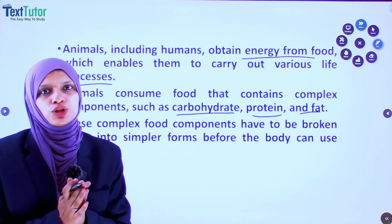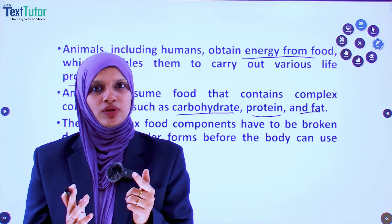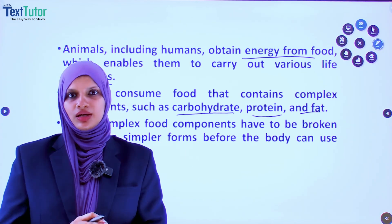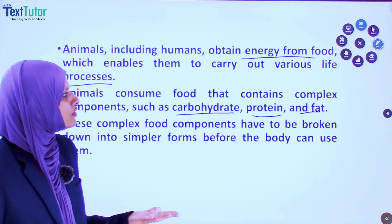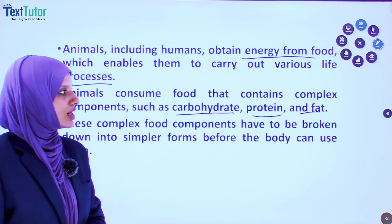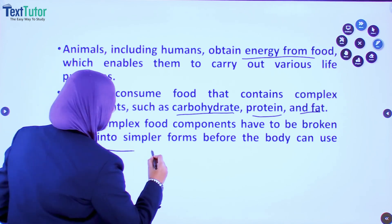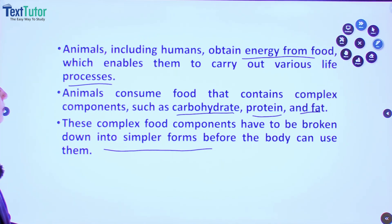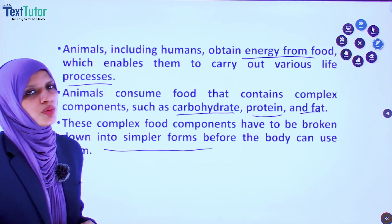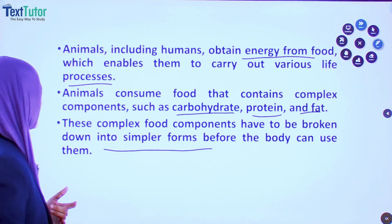In the previous chapter on adolescence, we have already studied that our food should include carbohydrate-containing, protein-containing, mineral-containing, vitamin-containing, and fat-containing food in our diet. These complex food components have to be broken down into simpler forms before the body can use them.